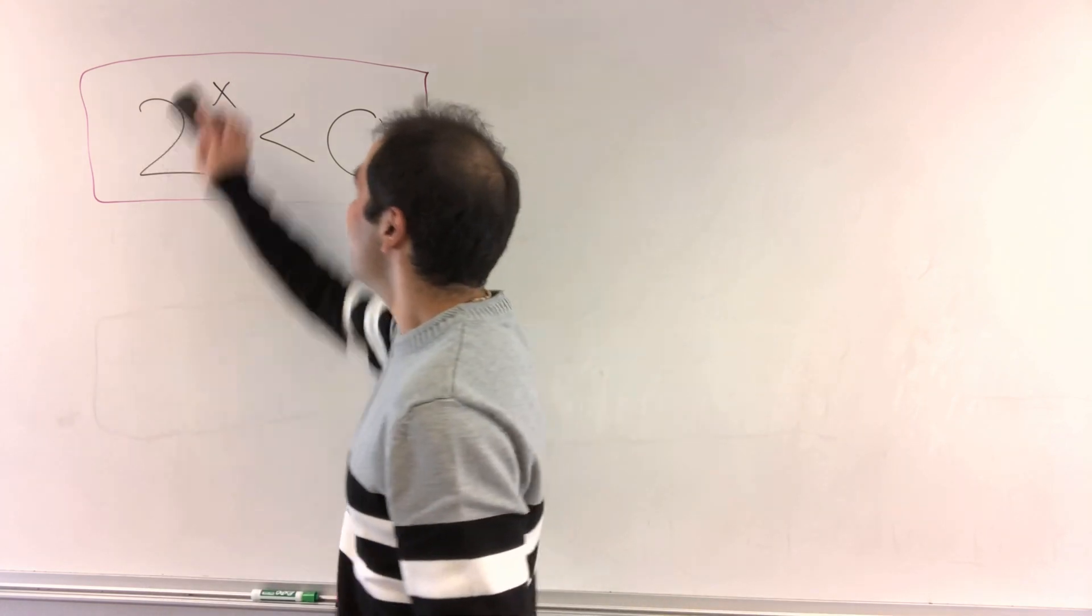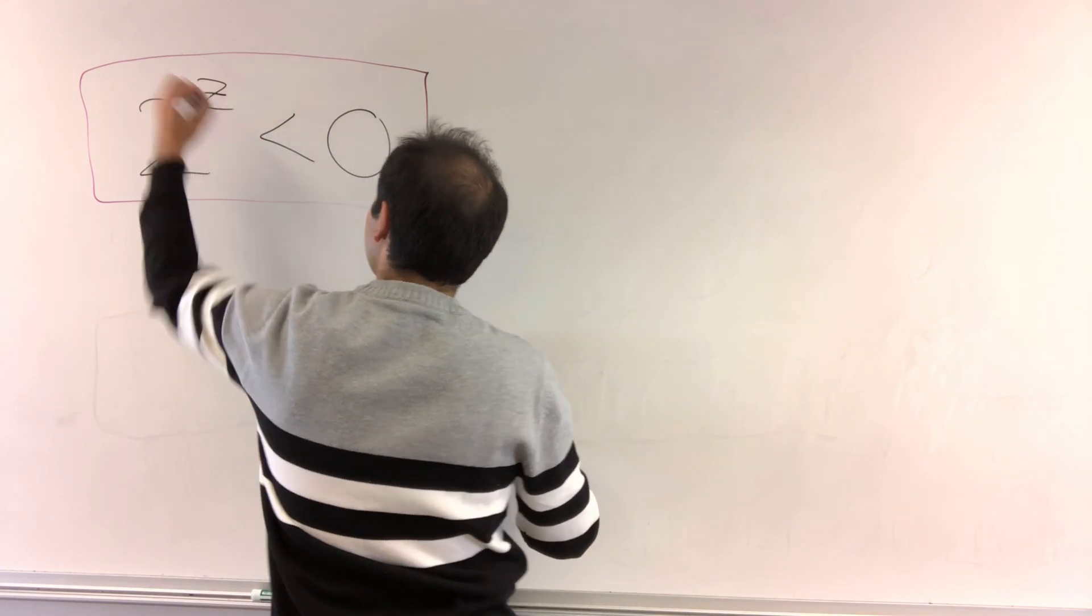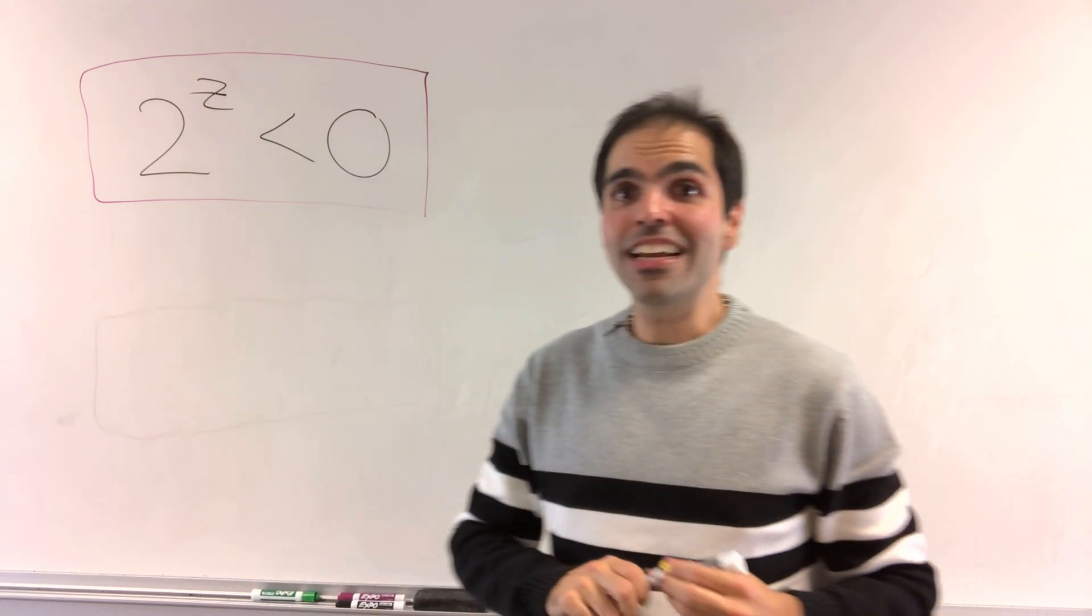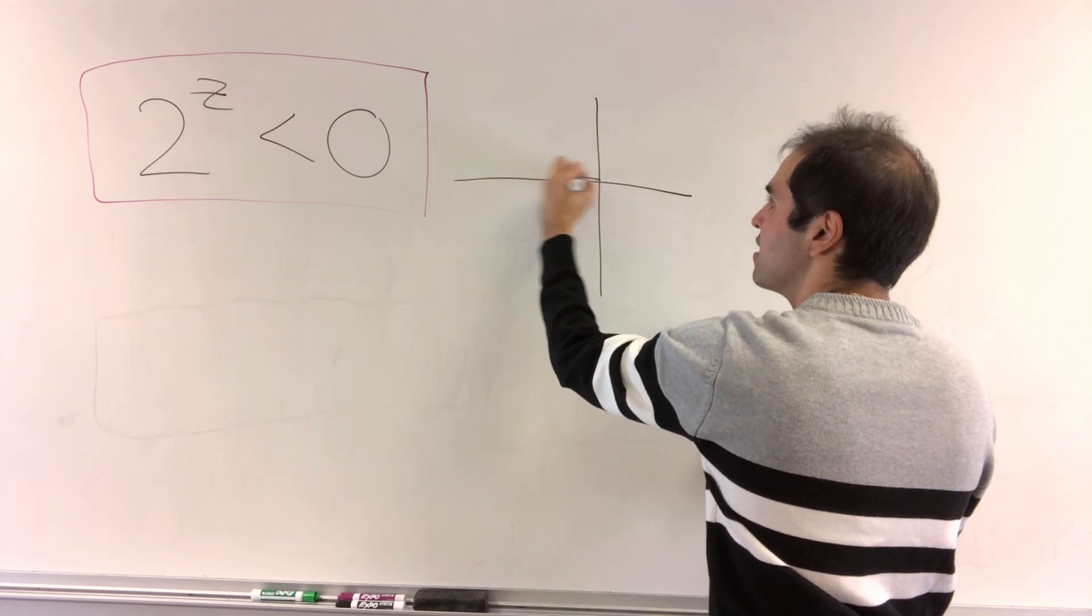Not in the complex world. So in fact, let's figure out when 2 to the z is negative. And this is very nice geometrically, because what does it mean to be negative in the complex plane?